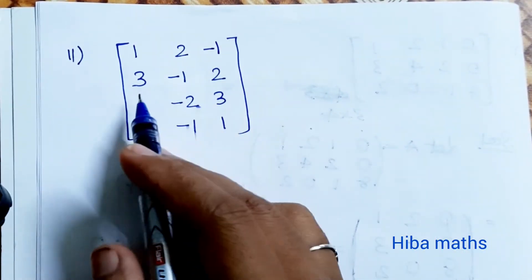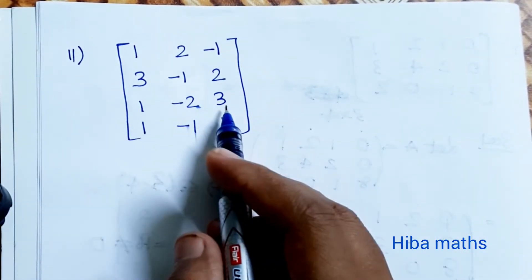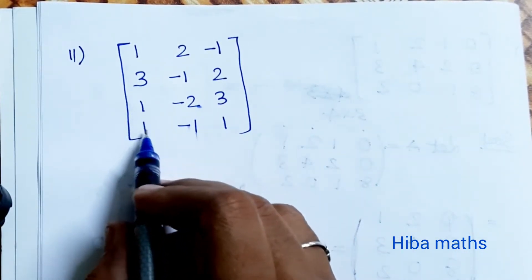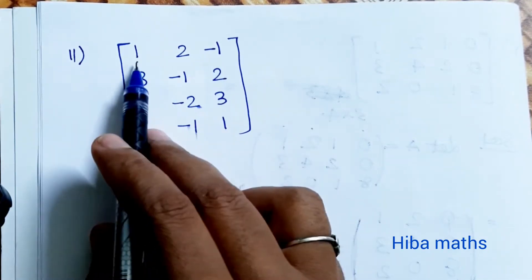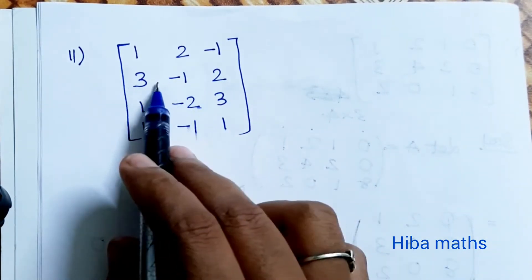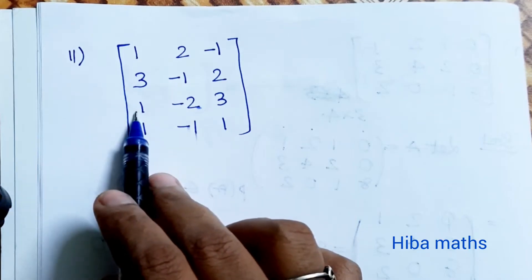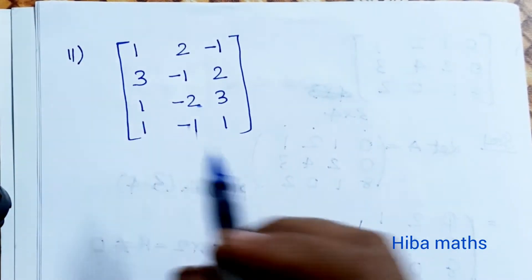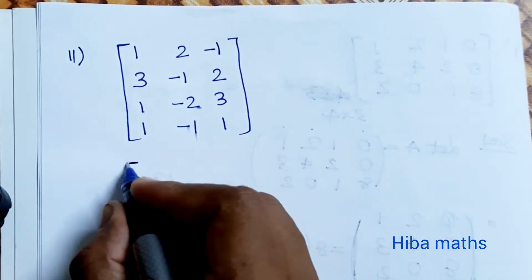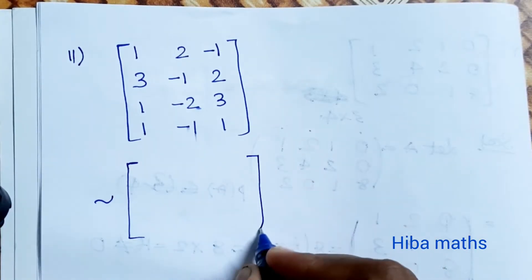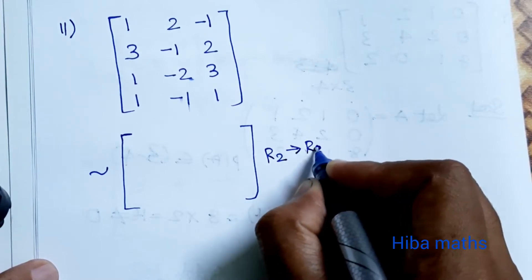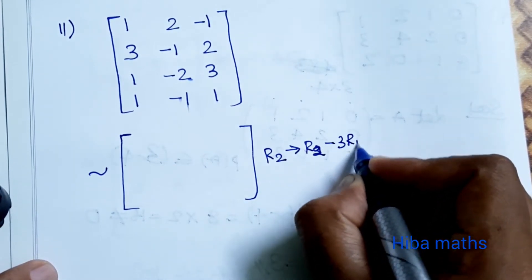Second question matrix: [1, 2, -1, 3; -1, 2, 1, -2; 3, -1, 1, ?]. Now we will start the row operations. R1 into 3 because R2 is going to be minus. Then R2 equals 0. The conditions model: matrix changes to R2 minus 3 times of R1.